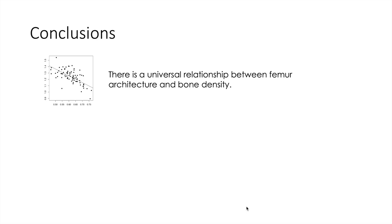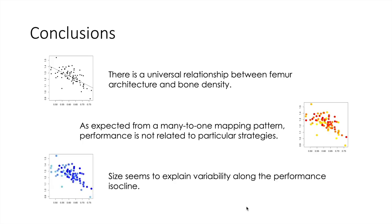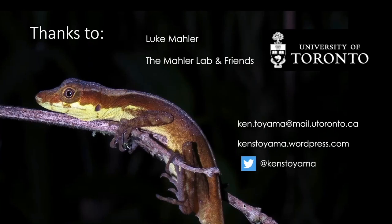To conclude: I show that there is a universal relationship between femur architecture and bone density; that, as expected from a many-to-one mapping pattern, performance is not related to particular strategies; and that size seems to explain variability along the performance isocline. I would like to thank my supervisor Luke Muller and the Muller lab at the University of Toronto for useful discussions. If you have any questions, you can write me an email, check my webpage for other research, or follow me on Twitter.